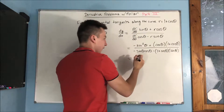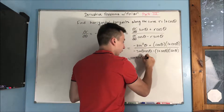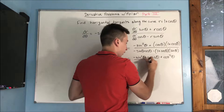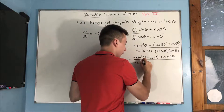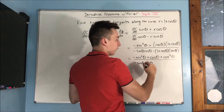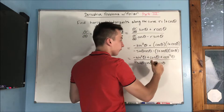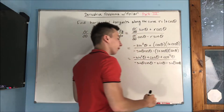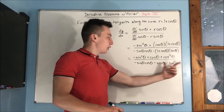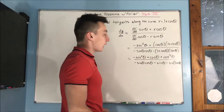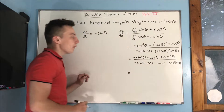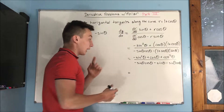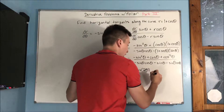Multiplying these out, the derivative equals negative sine squared theta plus cosine theta plus cosine squared theta, all over negative sine theta cosine theta minus sine theta minus sine theta cosine theta. We have two sine theta cosine theta terms that combine to minus two sine theta cosine theta. On top, cosine squared minus sine squared is the double angle identity cosine of two theta.